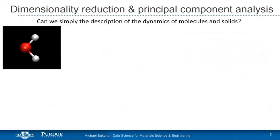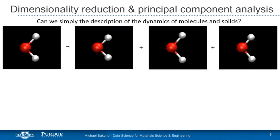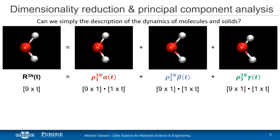I'd like to start with a simple example of dimensionality reduction and tie it into the algorithmic approach to principal component analysis. This is a simple molecule defined by three atoms moving in time. Each atom has its own three-dimensional motion, giving us 3N data evolving over time. We want to create a linear combination of uncorrelated motions from that time evolution.